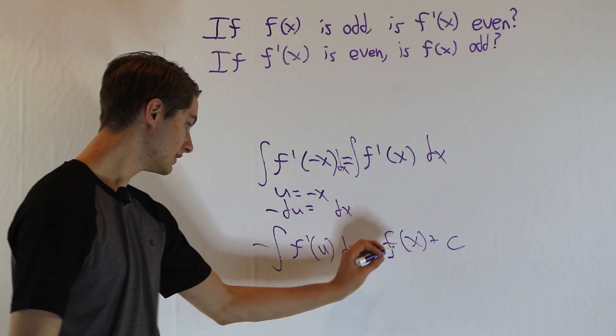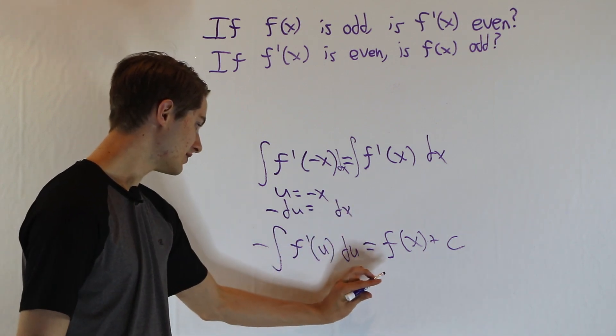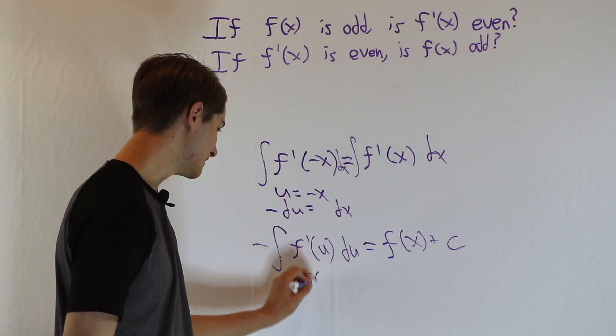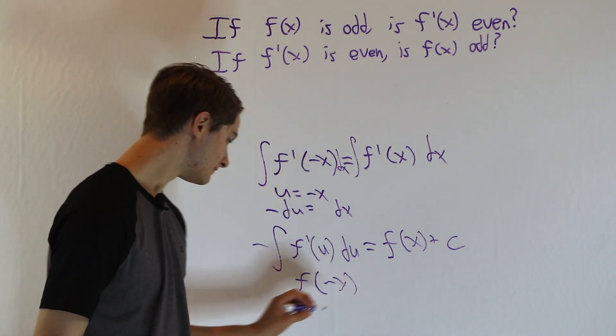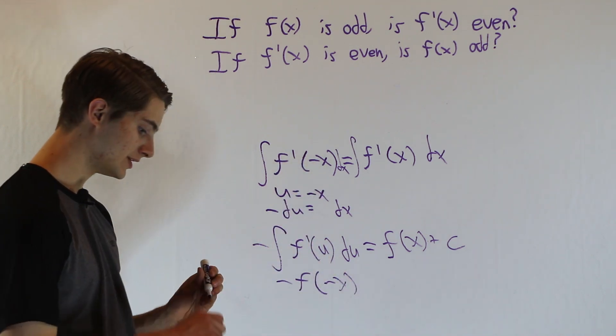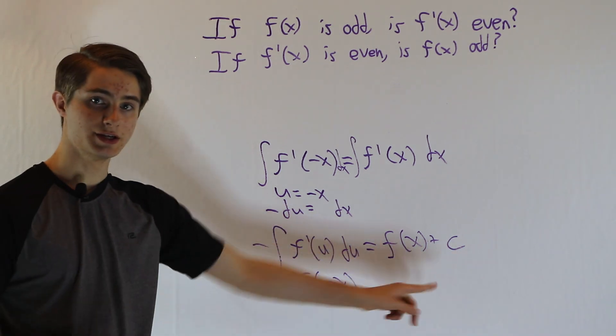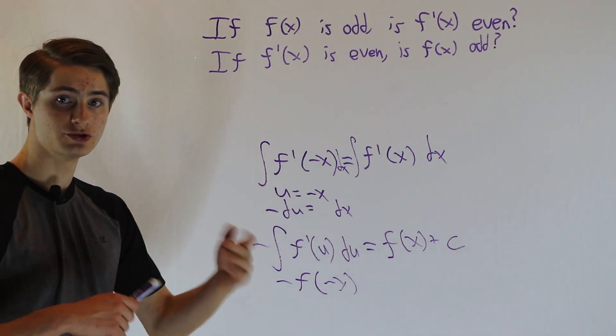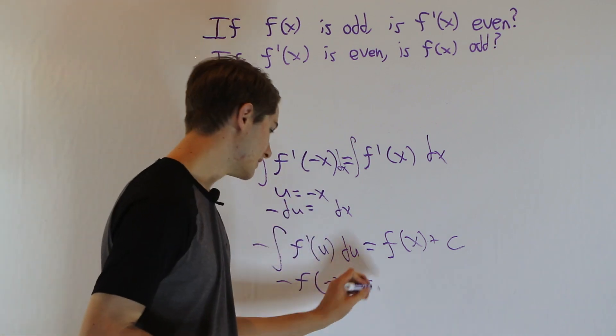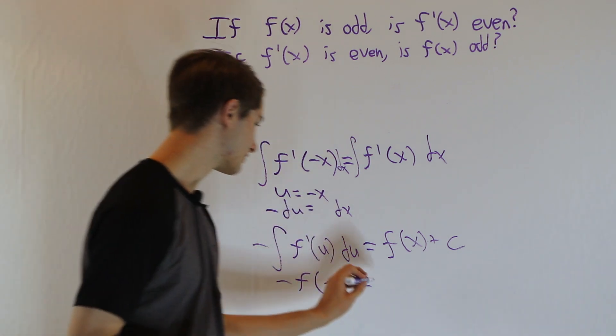And then if we look at this integral over here, the integral of f prime of u du, that's going to be f of u, and then u is negative x. And we have our negative out front. We could add c on this side, but because we already added c on the other side, it's not necessary because those two constants are going to end up sort of absorbing each other or canceling out.